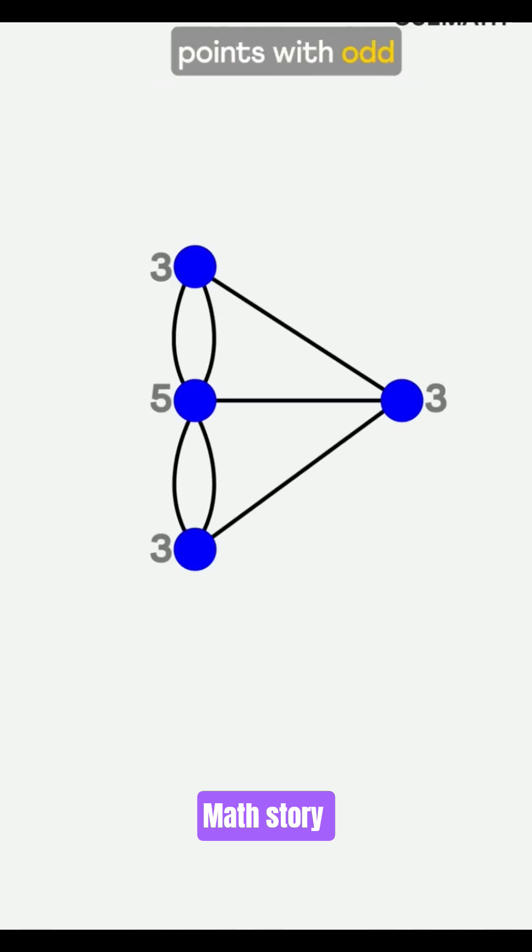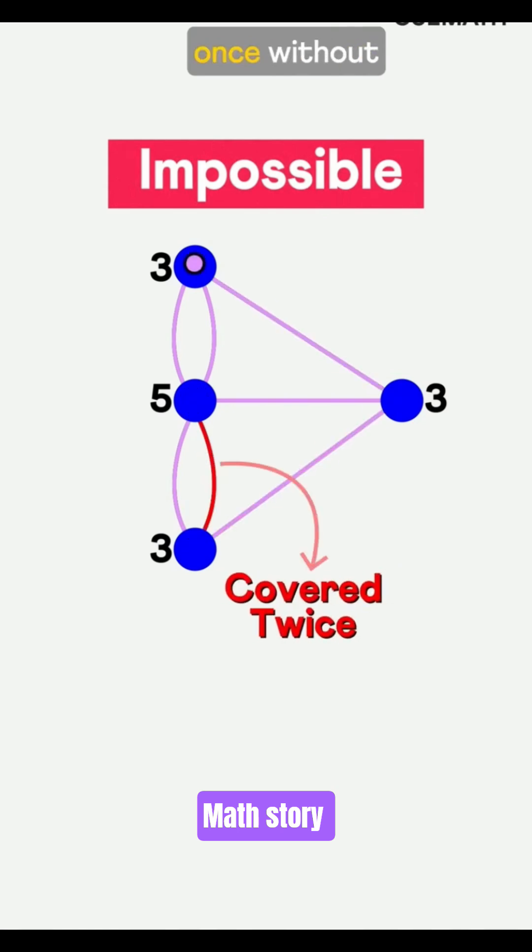Königsberg had four points with odd connections, so Euler concluded it was impossible to cross the bridges once without repeating.